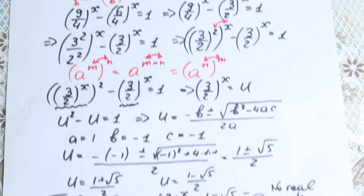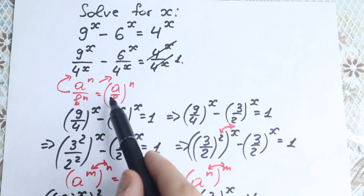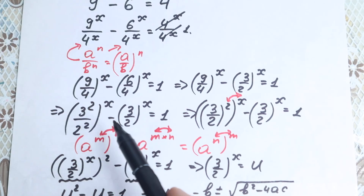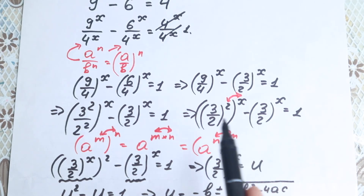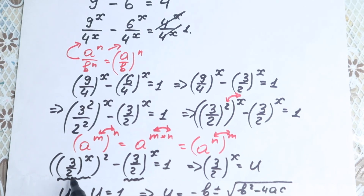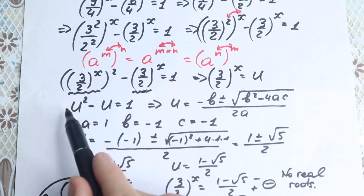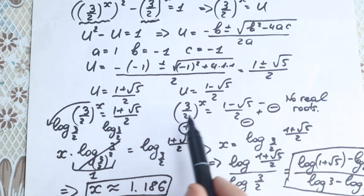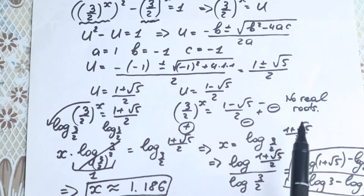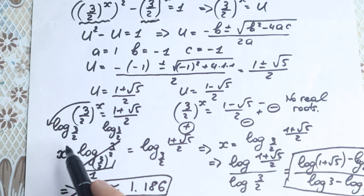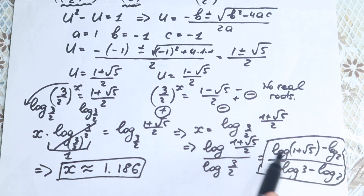Let's go back and review the steps. First, we used the power rule to factor with common parentheses. Second, we needed to create a quadratic equation by getting the same base — 3 over 2 to the power x — in both terms, which allowed us to substitute u. We got a quadratic equation with two cases for u. The first case was negative and has no real solution — maybe a complex one. The second, positive case gave us the real solution x approximately equal to 1.186.